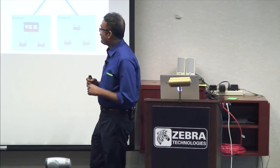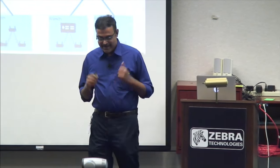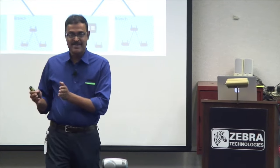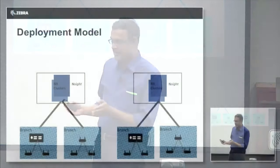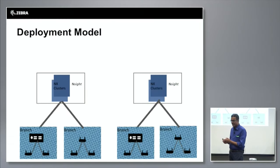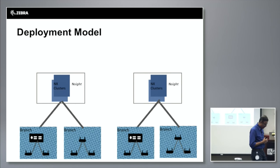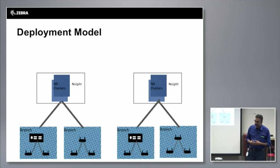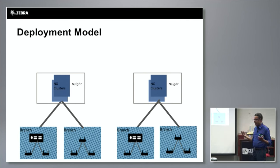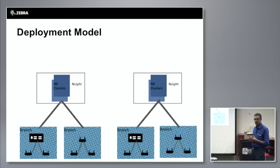Insight can be deployed in a couple of ways. One, it co-exists with the WiNG management platform — it runs on the same physical hardware where you run the WiNG controller and is launchable as an application from the WiNG interface. In this case, the scale limit is up to 10,000 access points.